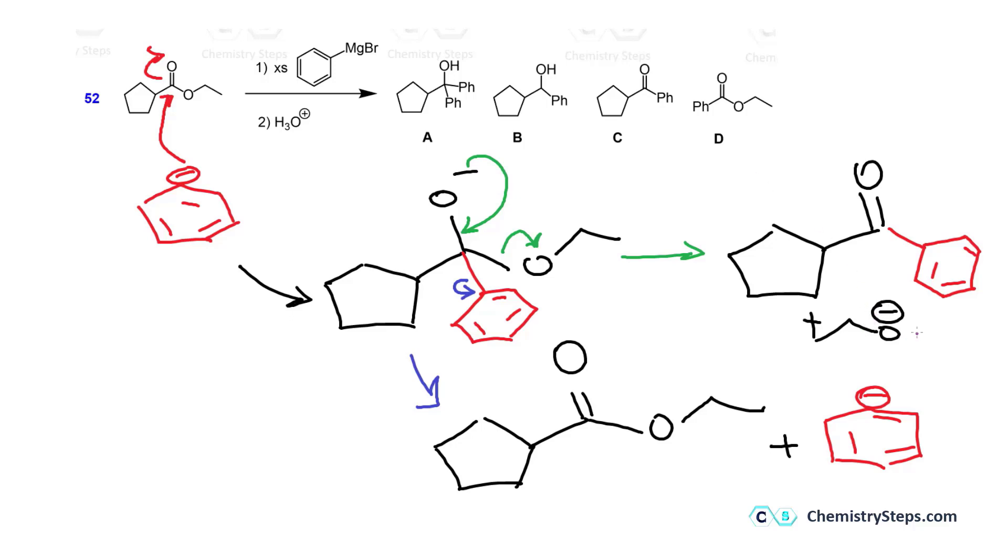So out of these two, you need to realize that this is a better leaving group. And therefore, this pathway is going to predominate. So that's the one addition of the Grignard.